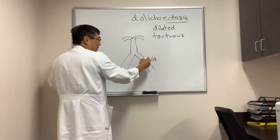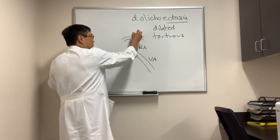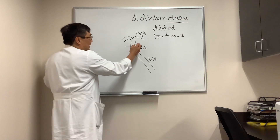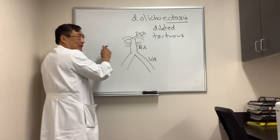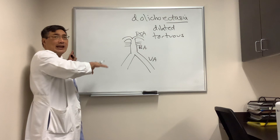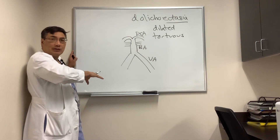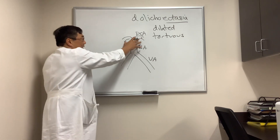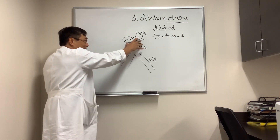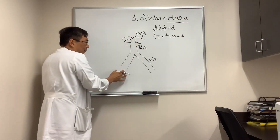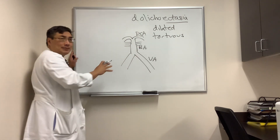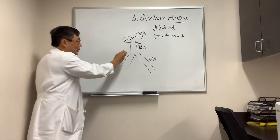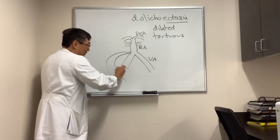The vertebral arteries become the basilar artery and then terminate in the posterior cerebral artery. There are branches that come off that go to the cerebellum — both the anterior and the posterior inferior cerebellar arteries, as well as the superior cerebellar arteries. And so when we have branches of the vertebral basilar system that become dolicoectatic — dilated and tortuous — it might end up looking like that.